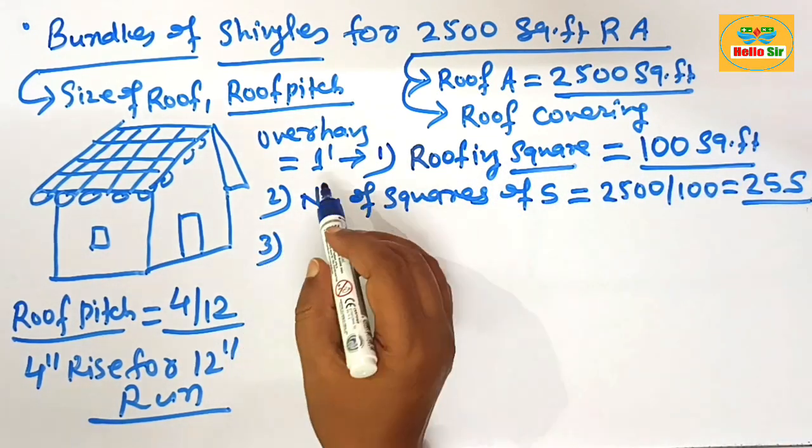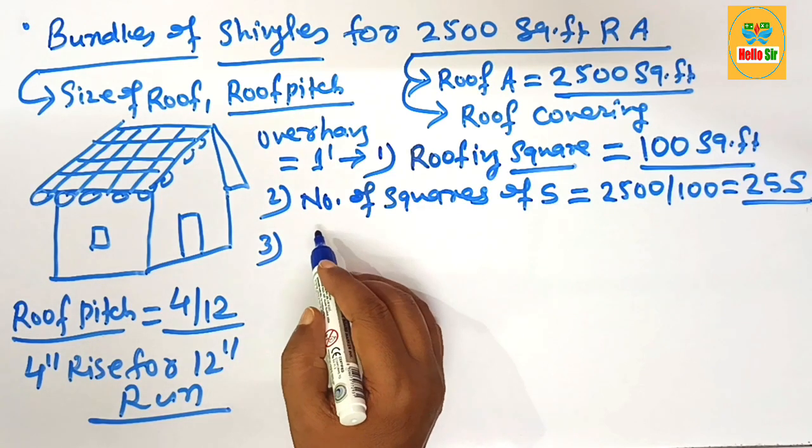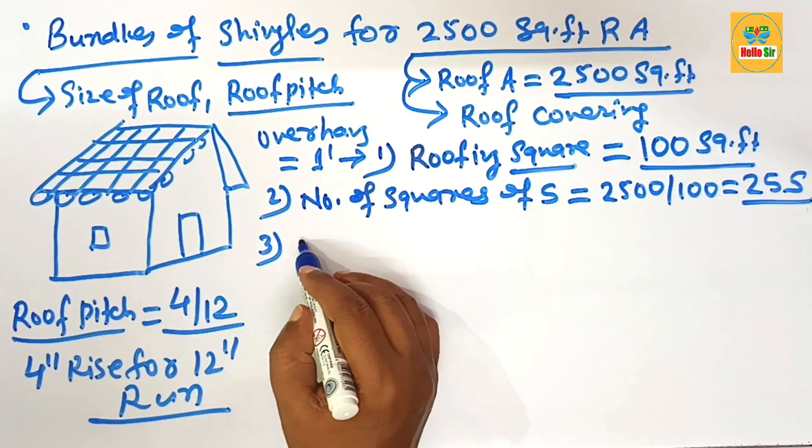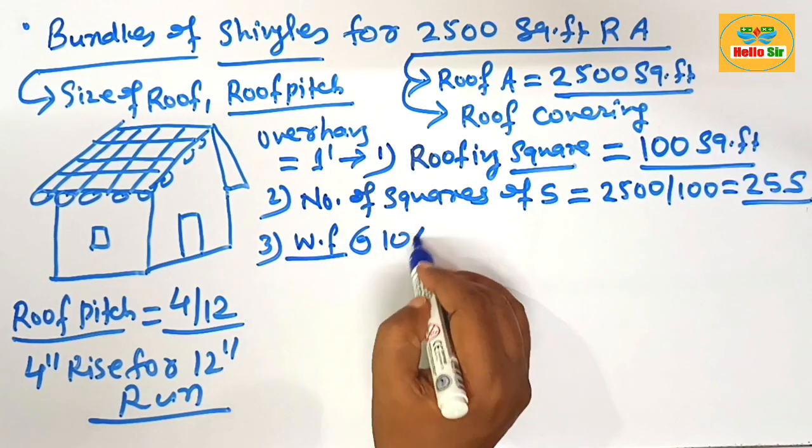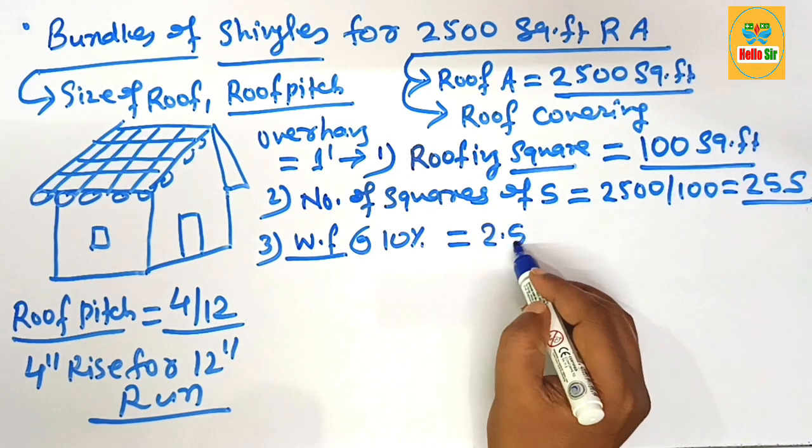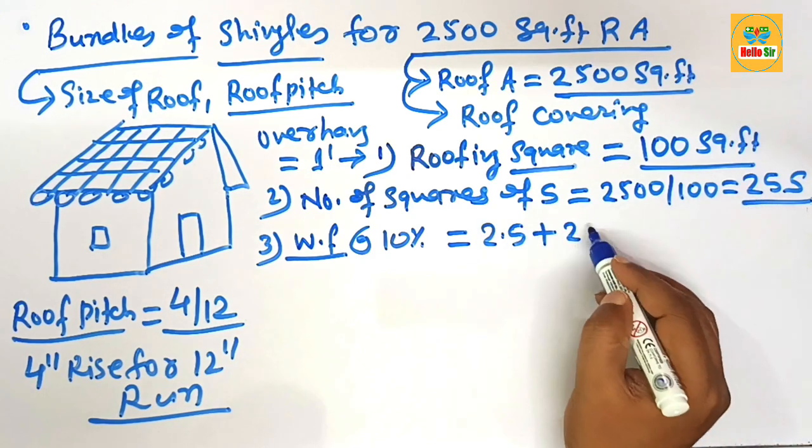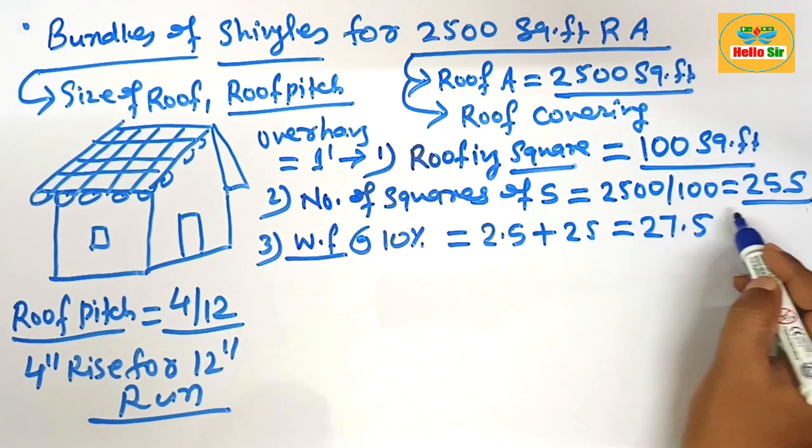And you know that some shingles are damaged during transportation, storage, installation and cutting process. That's why we take waste factor that is about 10%. 10% of that one is 2.5 square. A total 25 square. That will be about 27.5 square.